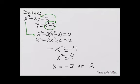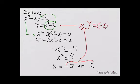So I can substitute either of these values for x back into either equation to get y. Let's use this equation. When x equals negative 2, y equals negative 2 squared minus 3, 4 minus 3, which is 1.